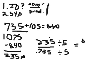235 divided by 5, I'm just going to use my calculator here, that's going to give us 47. And then 735 divided by 5 is going to give us 147.